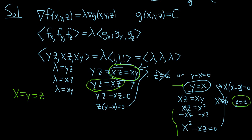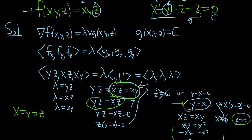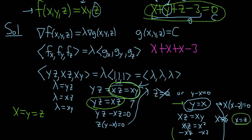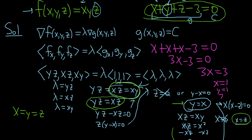Now we can go to our constraint: x + y + z − 3 = 0. Since x, y, and z are all the same, we can write this as x + x + x − 3 = 0, so 3x − 3 = 0, meaning 3x = 3, so x = 1. But they're all the same, so y is also equal to 1 and z is also equal to 1.